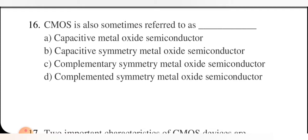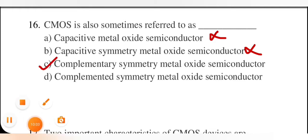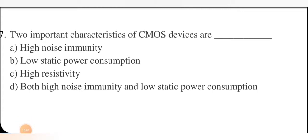CMOS is also sometimes referred to as — the correct answer is complementary symmetry metal oxide semiconductor, so option C is correct. Two important characteristics of CMOS devices are high noise immunity and low static power consumption. In CMOS we use two transistors — one PMOS channel and one NMOS channel; at one time only one is on. That is why noise immunity is high and performance is better. Option D is correct.